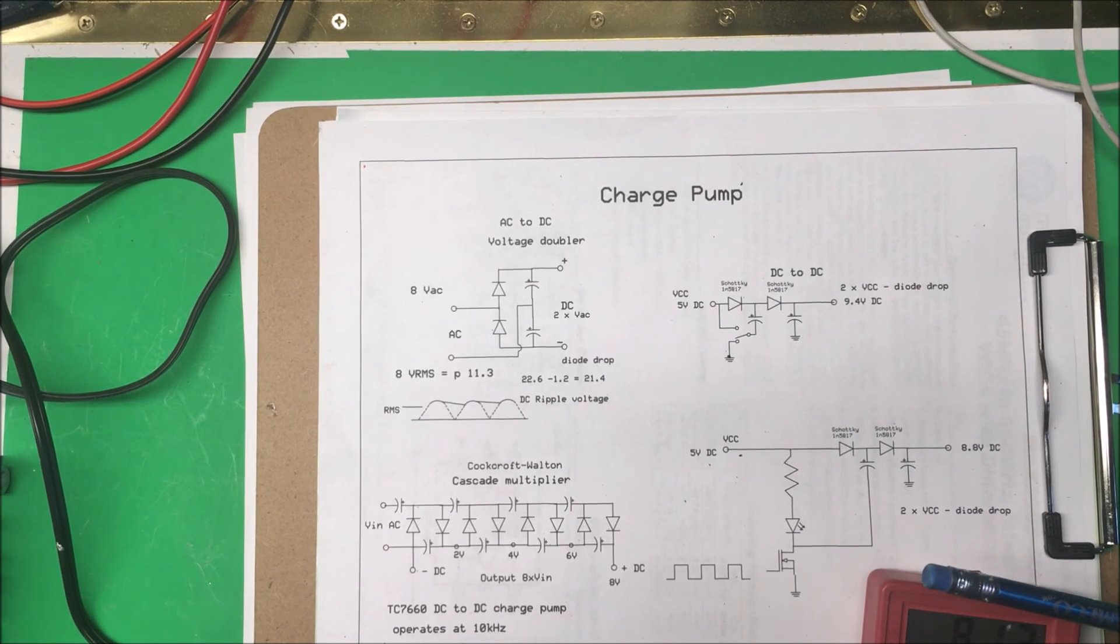A lot of times you'll need a charge pump when you're converting from a TTL signal to an RS-232 signal, because the 232 signal is 15 volts plus or minus, and TTL is 5 volts or so.